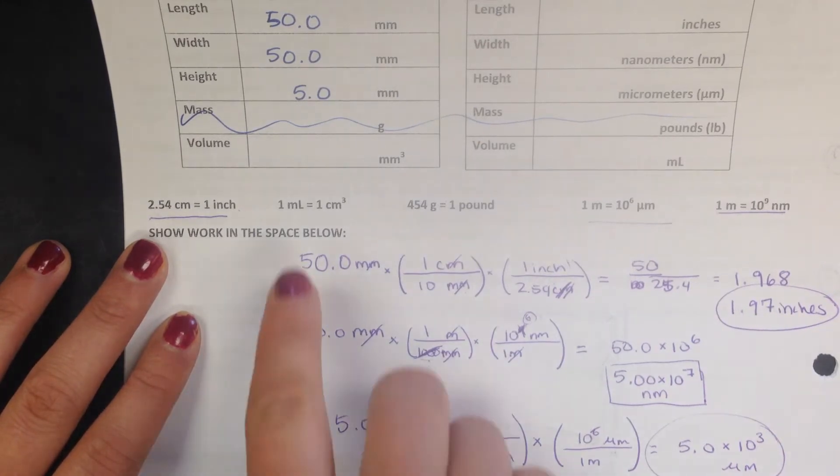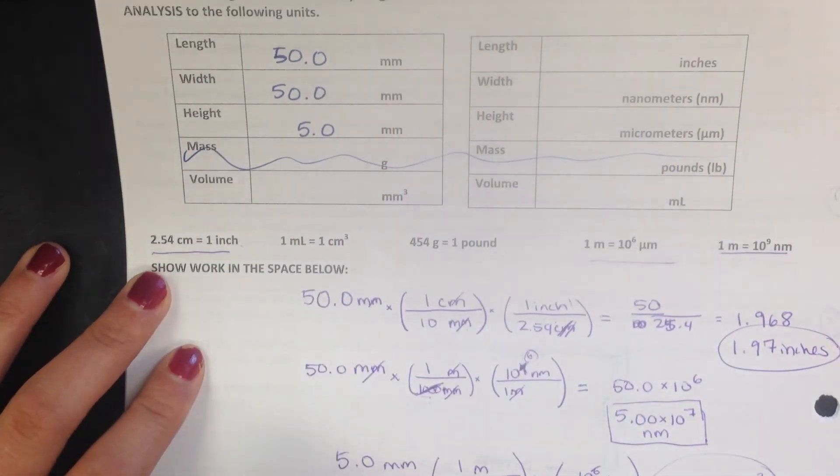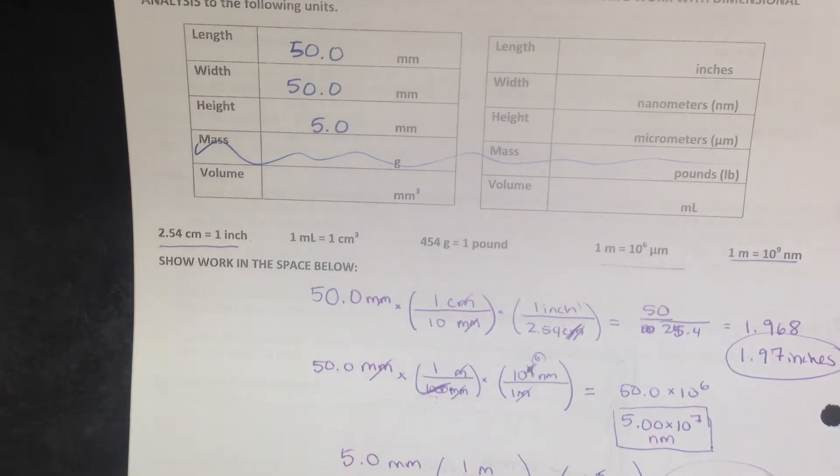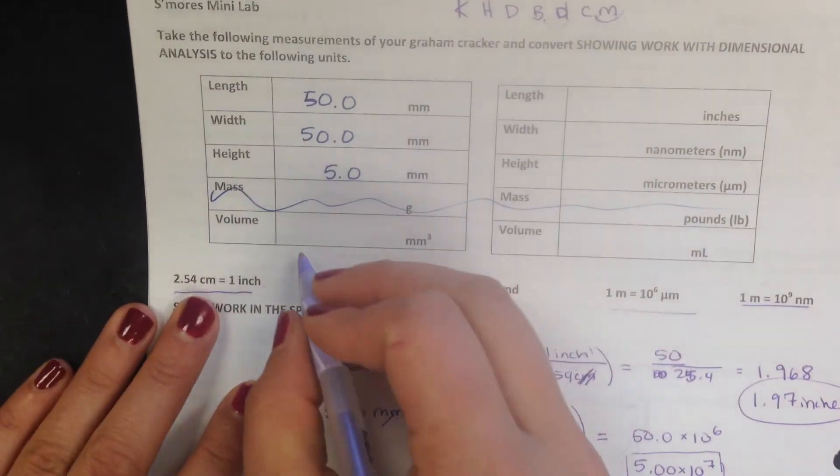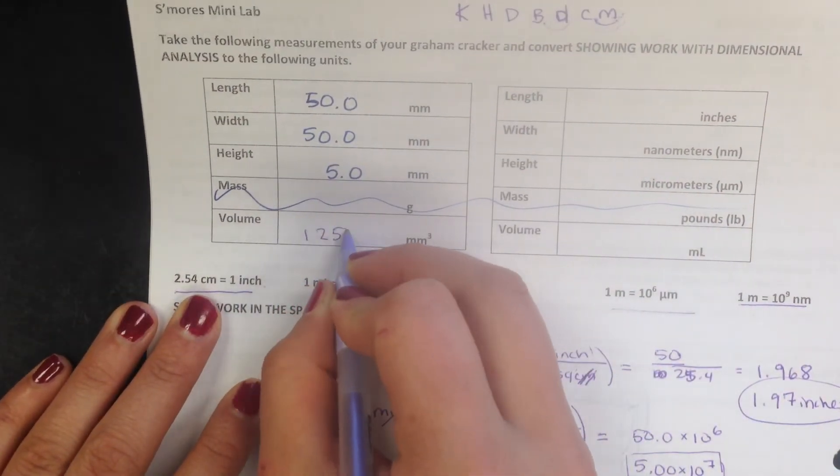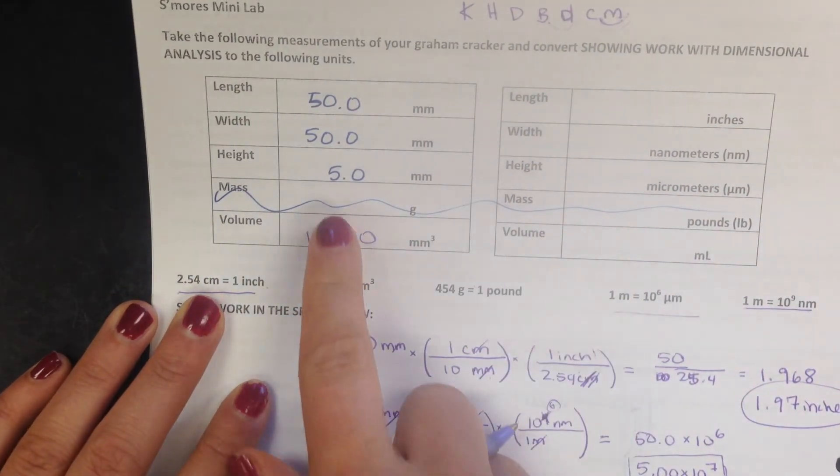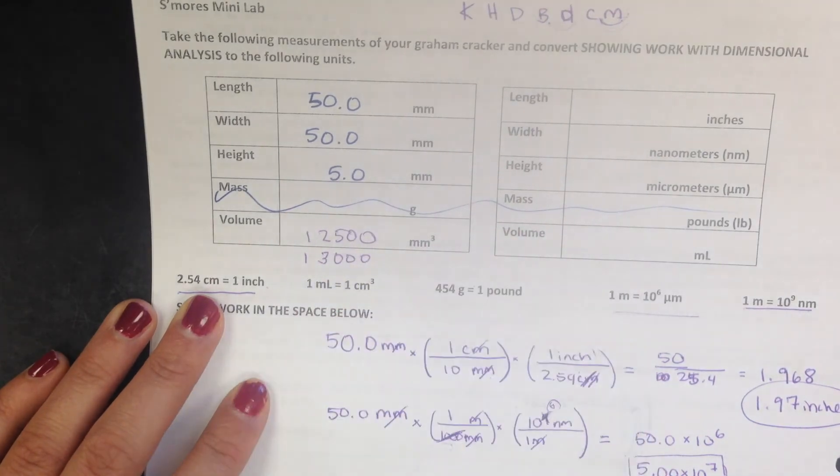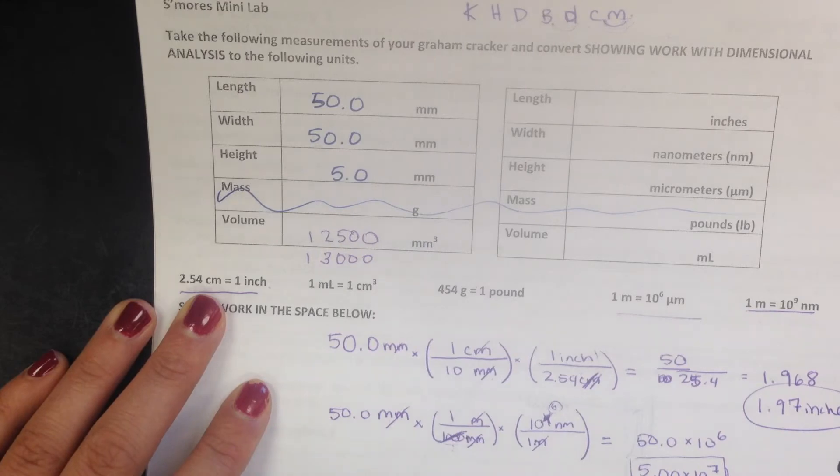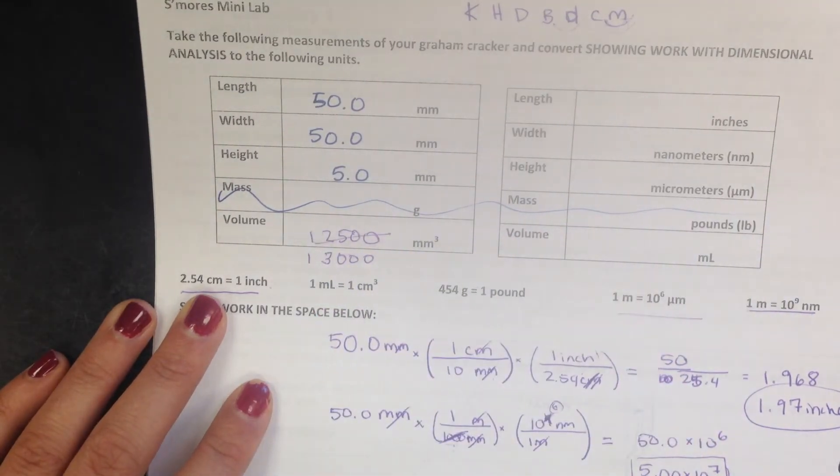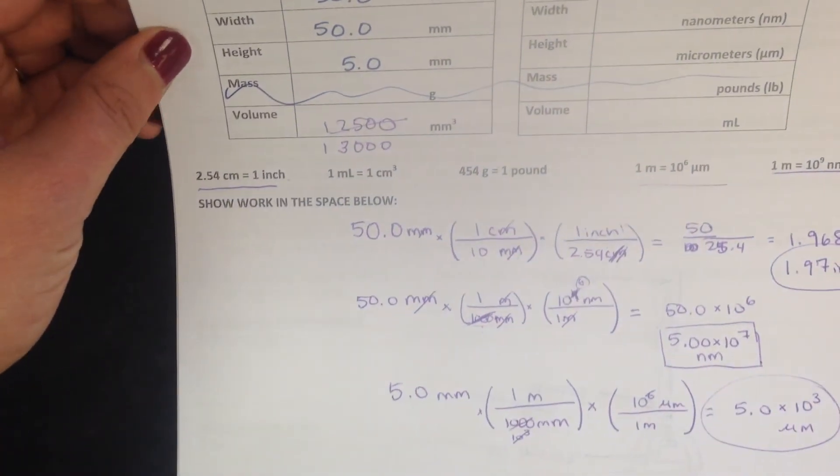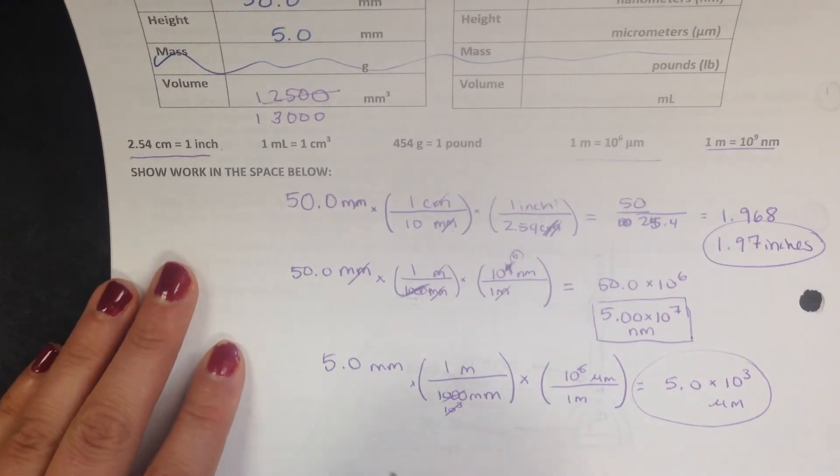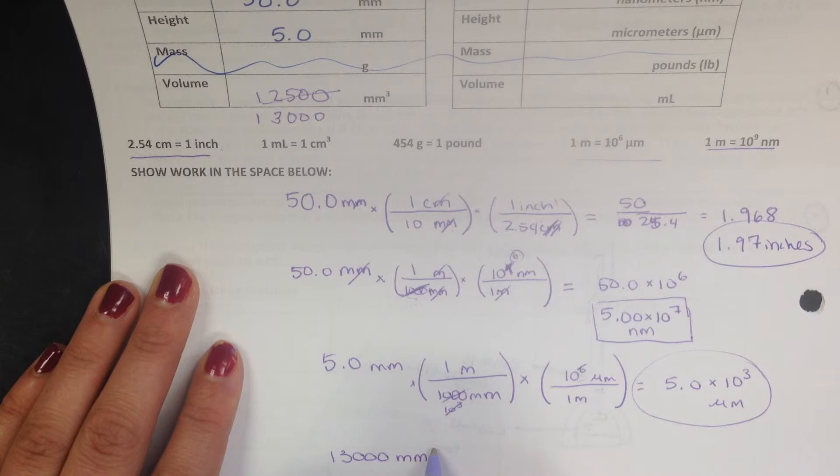Okay, then we had the volume. So you had to multiply all these to get the volume. 50 times 50 times 5 gave me 12,500. Now, in class, some of you were going with two sig figs, which would be correct because we're multiplying. And that's going to be 13,000. To convert to milliliters, it's a little tricky, so we've got to go 13,000 millimeters cubed.